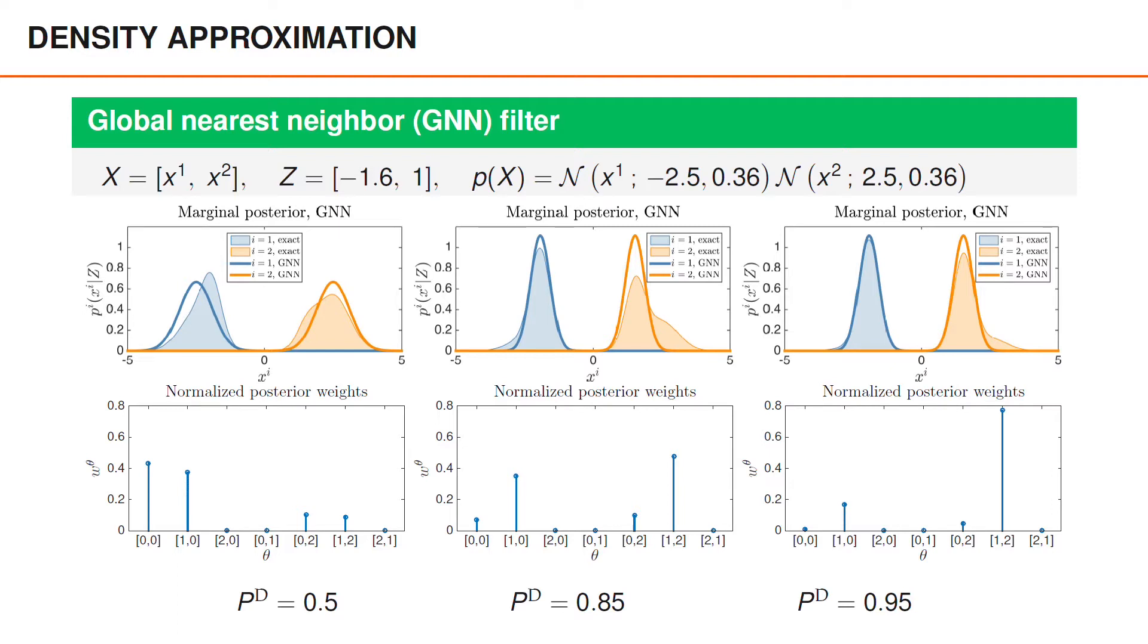We also show the posterior weights for the different data associations. When PD is 0.95, which is shown on the right, one of the data association hypotheses has a posterior probability that is almost 0.8, which is quite a bit larger than the probabilities of the other associations. Therefore, approximating the posterior using the most probable association hypothesis gives us a reasonable approximation of the exact posterior. For object 1, shown in blue, there is actually very little approximation error.